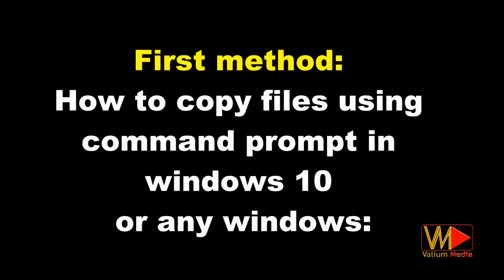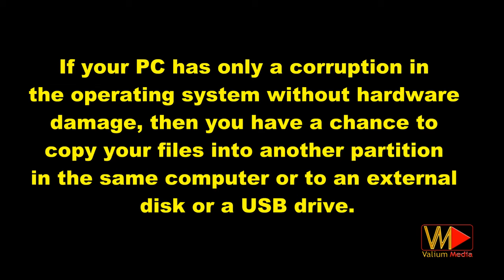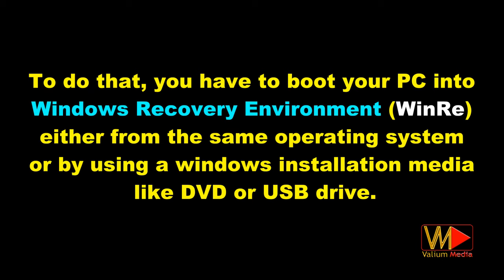Method one: how to copy files using command prompt in Windows 10 or any Windows version. If your PC has only a corruption in the operating system without hardware damage, then you have a chance to copy your files into another partition in the same computer, or to an external disk or USB drive. To do that, you have to boot your PC into the Windows recovery environment (WinRE), either from the same operating system or by using a Windows installation media.